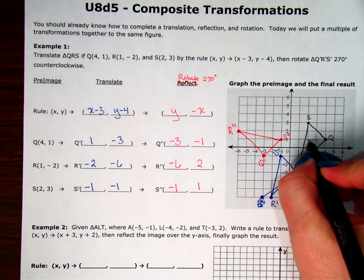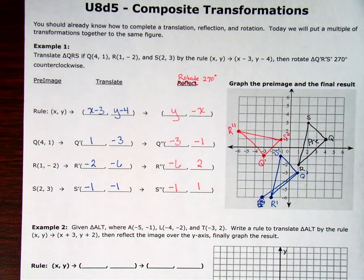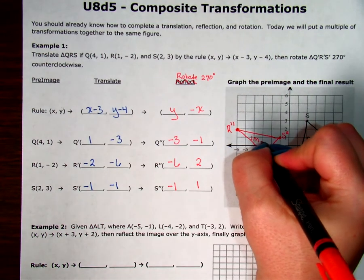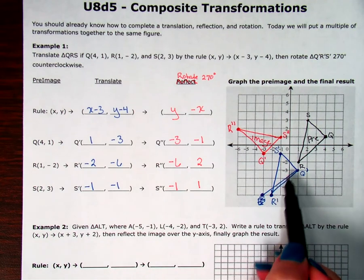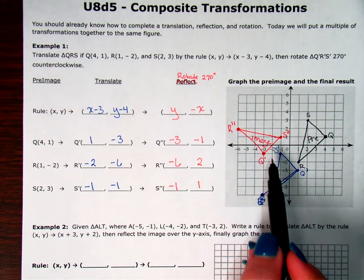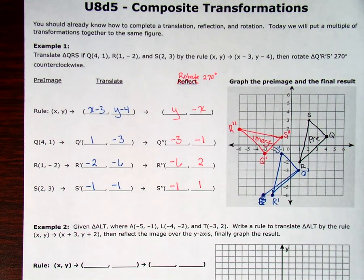Okay. So, in this figure, this is my pre-image. And, your image is the very final image. And, this is just like a stopping point on the way. This is my pre-image. This is my final image after I have done both of these transformations.